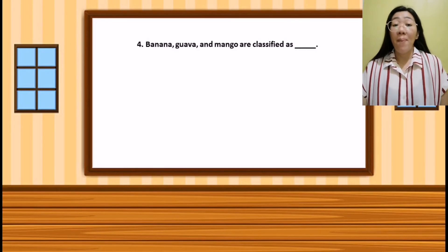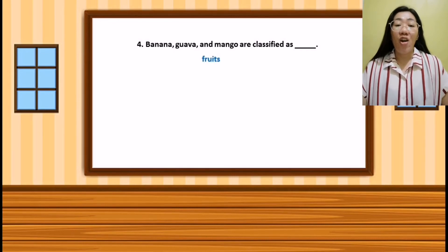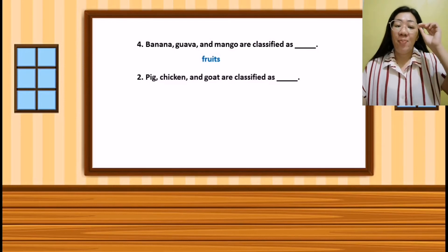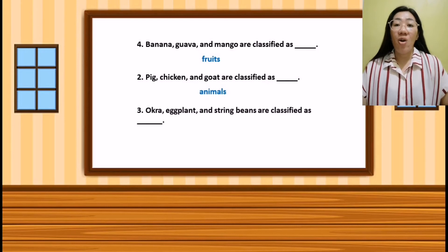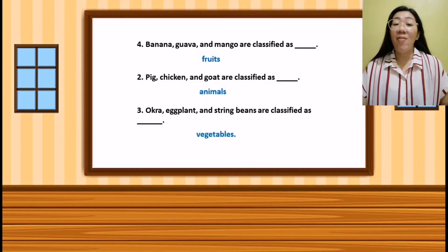Next, banana, guava, and mango are classified as — yes, they are fruits. Next, pig, chicken, and goat are classified as — they are animals. The last one: okra, eggplant, and string beans are classified as — they are vegetables.